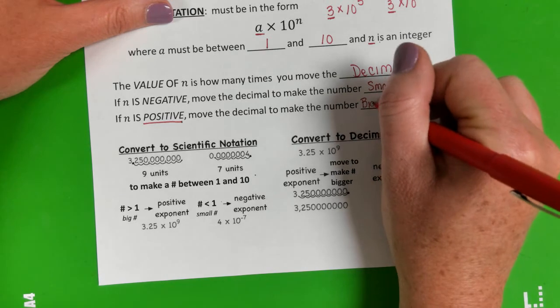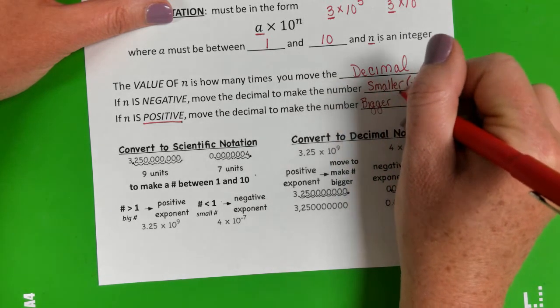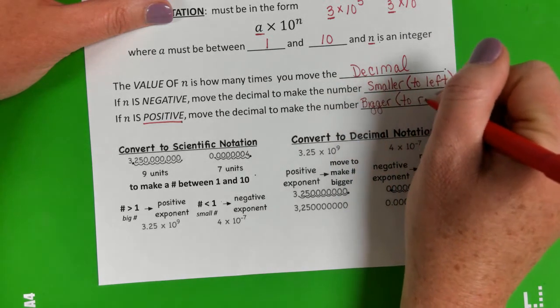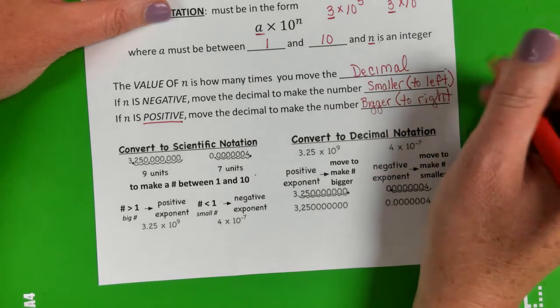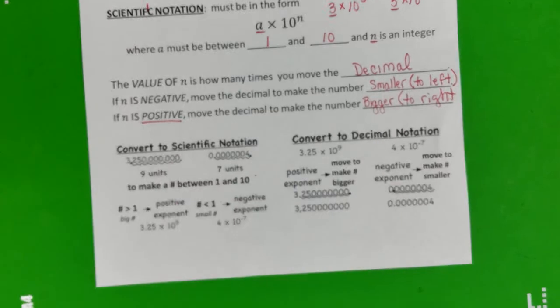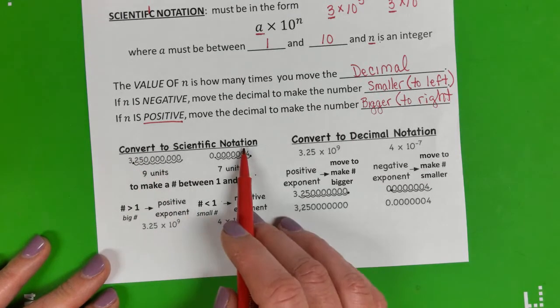To make the number bigger, or which would also mean to the right. Okay, so let's look at the examples below. Convert to scientific notation.